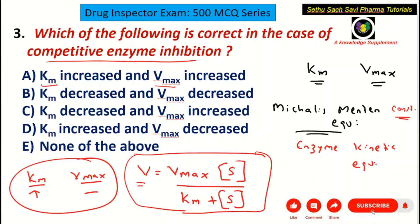As you can see, there is no correct answer among choices A, B, C, or D — because choice A states Km increased and Vmax increased, which is incorrect. So the correct answer for this question is E choice: none of the above. Hope you understood this discussion. Now let's go to the fourth question.